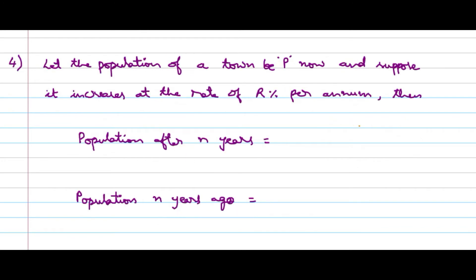Let the population of a town be P now, and suppose it increases at the rate of R percent per annum. These are population type of problems. Population after N years will be P into (1 + R/100) whole power N.